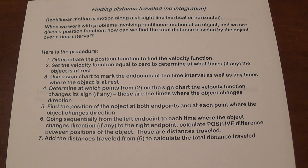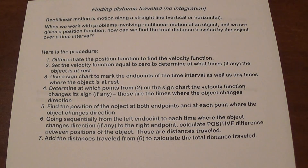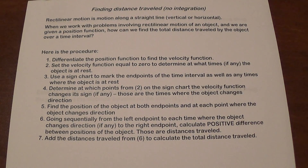When you have problems like this, we're going to differentiate the position function to find the velocity function. Then we're going to set the velocity function equal to 0 to find what times the object is at rest. We're going to use a sign chart to determine where the object is at rest.